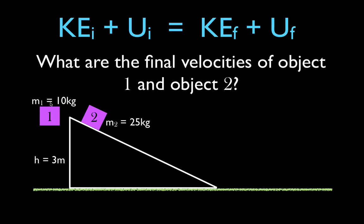Object number one has a mass of 10 kilograms. We're going to let it go, and it's going to fall through a distance of three meters. Object number two starts three meters off the ground but slides down a ramp, which is obviously longer than three meters. The mass of object two is 25 kilograms — two and a half times greater than object one. We want to know their final velocities just before they hit the ground surface.